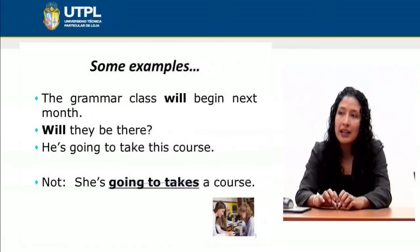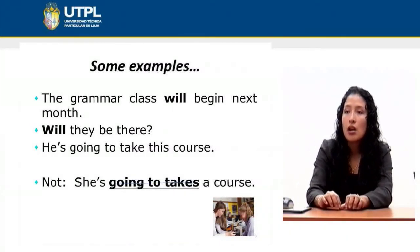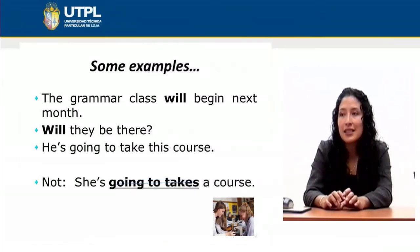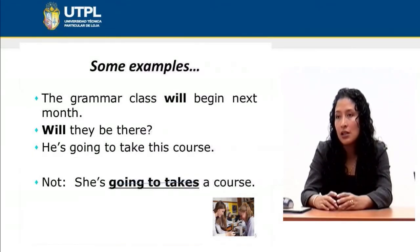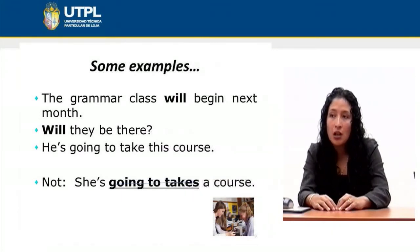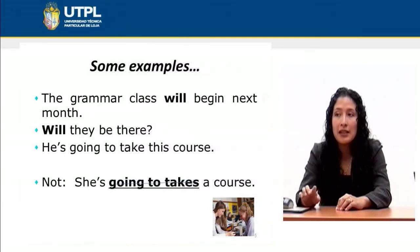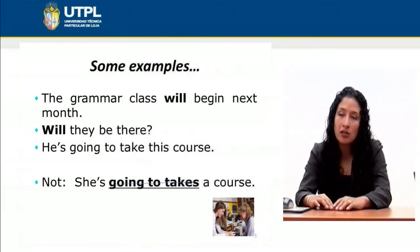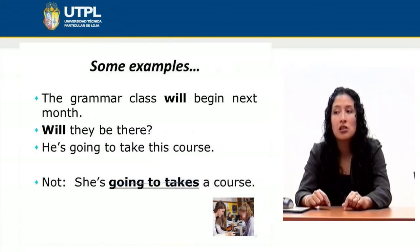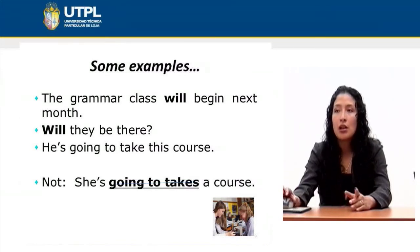When using 'will,' we don't have to add 'to' plus a verb or the infinitive, because 'will' is an auxiliary that transforms the sentence into a future situation. A very common mistake I have found in my students is that they write an 's' plus the infinitive — for example, 'she's going to takes.' Remember: when you have 'to' or an infinitive, the verb must be in the simple form. So it's 'she's going to take a course,' or 'she will take a course.'